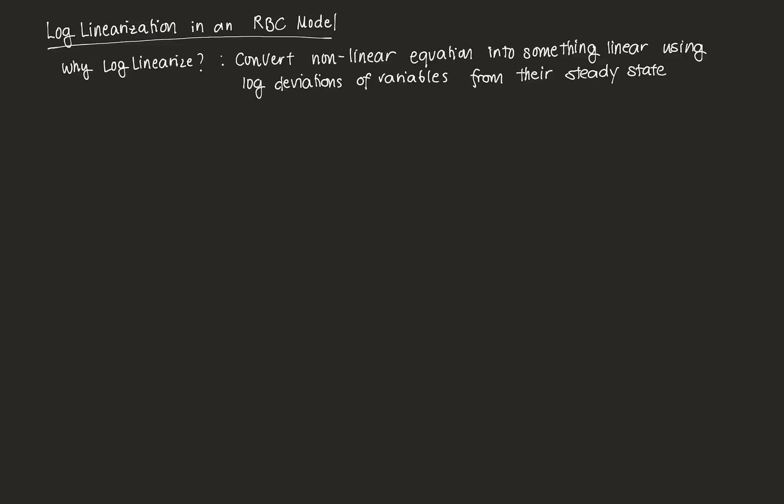So how does that go? Let's consider a variable, say we have a variable Z_T. And we define Z_T tilde as equal to ln(Z_T) minus the steady state value of Z_T, which is ln(Z bar).